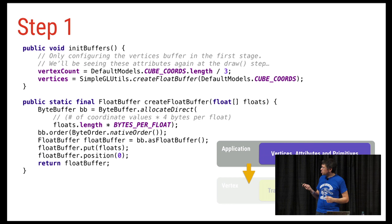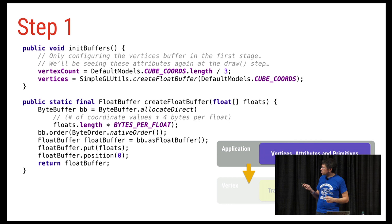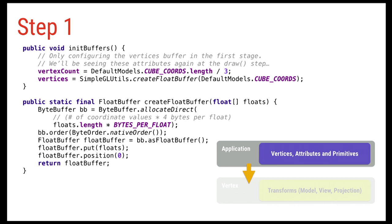Step one — initializing buffers. This is basically initializing a chunk of memory so that we can shove floats in there for our vertices and vertex attributes, all bundled together to pass to the pipeline. As you can see, it's fairly straightforward code. Not much to say except you're almost in C land, but you'll get used to it with OpenGL.